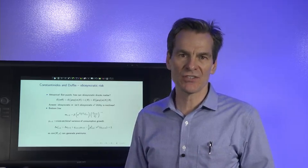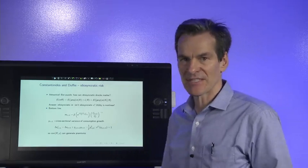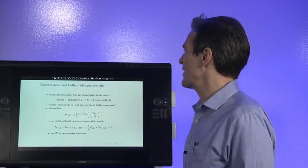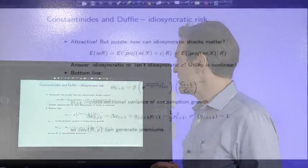Maybe expanding on the market structure is going to be the key to help us get macroeconomics and asset pricing linked up. Here we'll look at a beautiful example by Constantinides and Duffie, and their idea was to track down idiosyncratic risk.